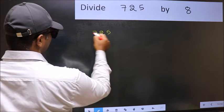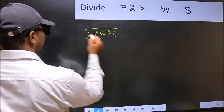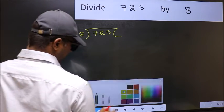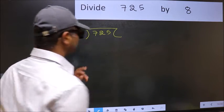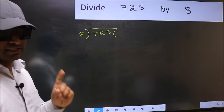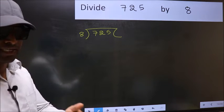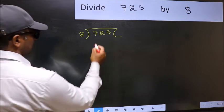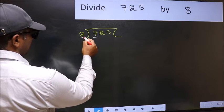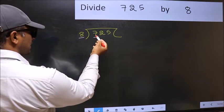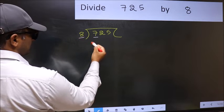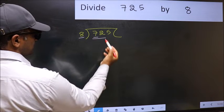7.25 and 8 here. This is your step 1. Next, here we have 7 and here 8. 7 is smaller than 8, so we should take two numbers, 72.